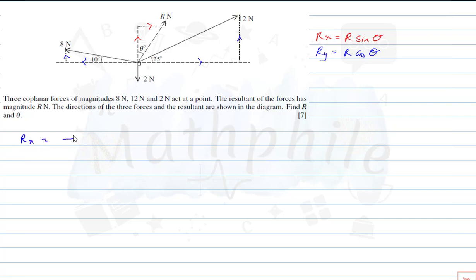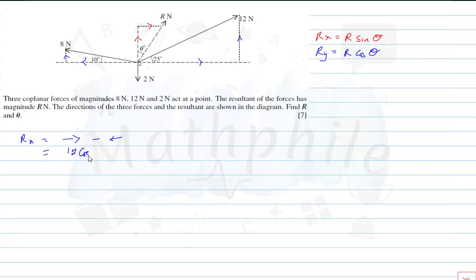The resultant in x is given by forces to the right minus forces to the left. There are two forces in the x-direction — one to the right and one to the left. The 12-newton force component to the right is 12 cos 25, because the side we're looking for is adjacent to the angle.